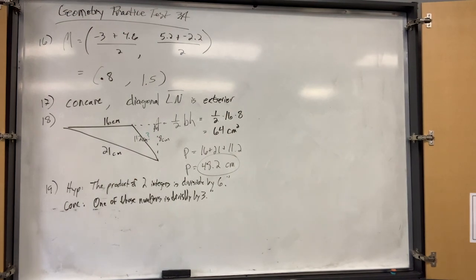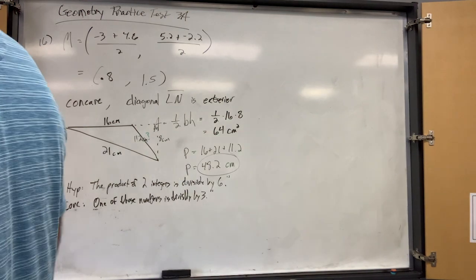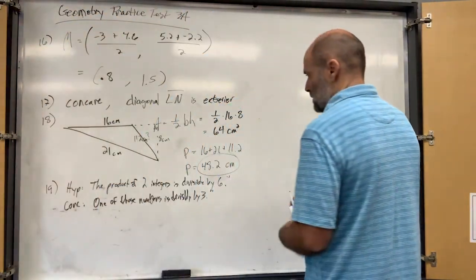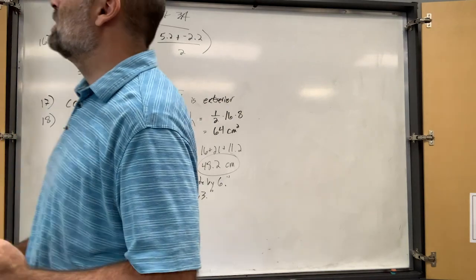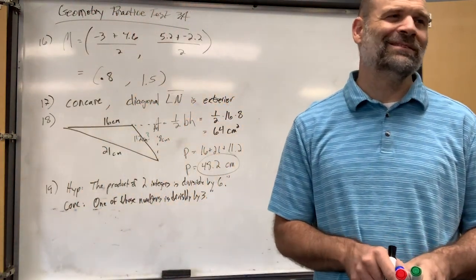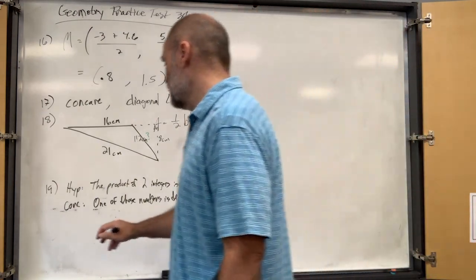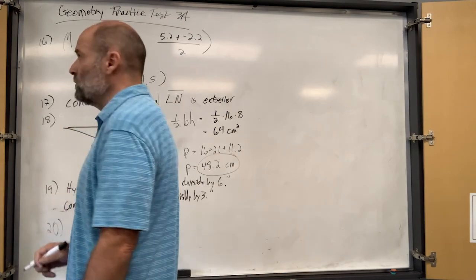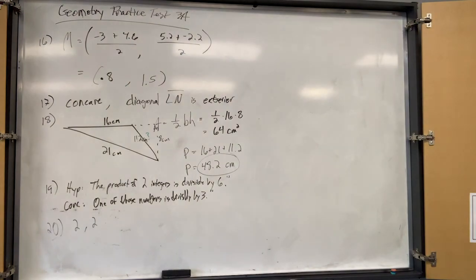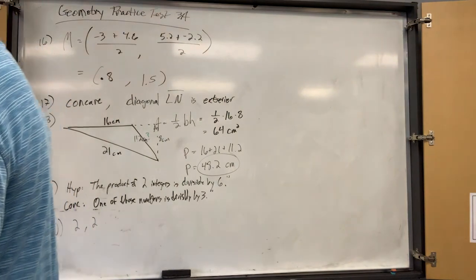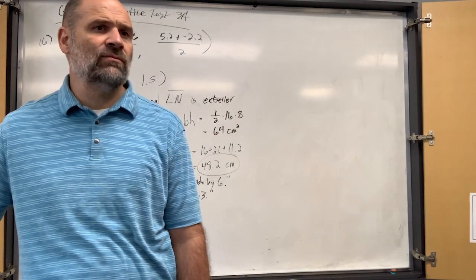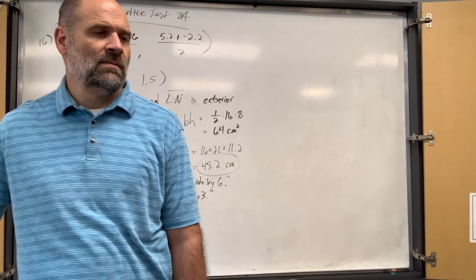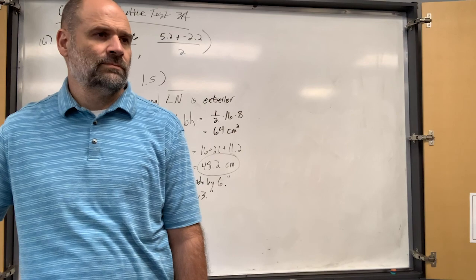Number twenty: find a counter-example to — the sum of any two integers greater than one is less than their product. Two and two works: 2 plus 2 is 4, and 2 times 2 is 4, so 4 is not less than 4. That disproves the conjecture. Note that 2 plus 3 equals 5 which is less than 2 times 3 equals 6, so that one holds.